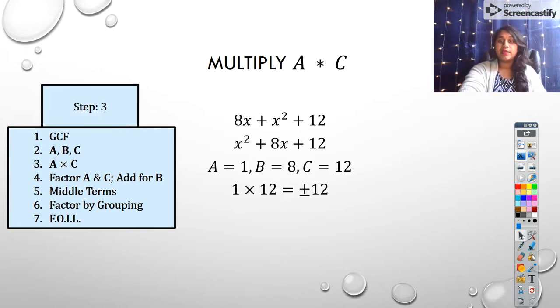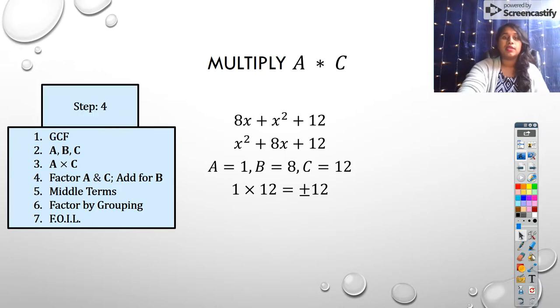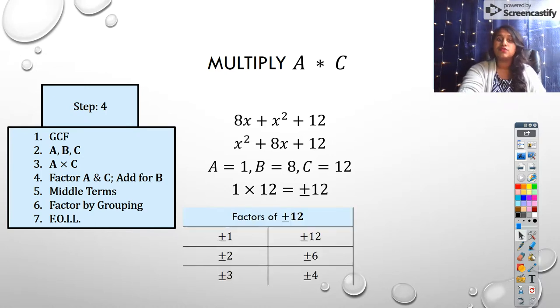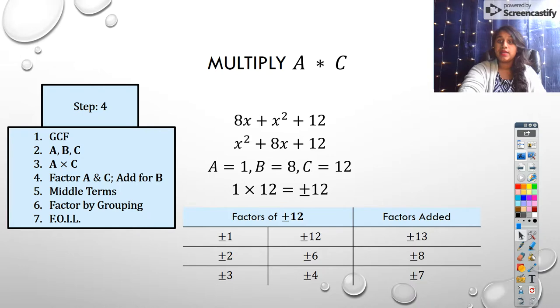A times C is 1 times 12. That's our step three. And so that becomes either positive 12, or technically, we could be looking at negative 12, right? If we're considering the fact that maybe our middle value is negative. But we check our middle value. It's positive. So we're probably looking at positive factors. So we go ahead and factor our A times C to figure out what adds up to B.